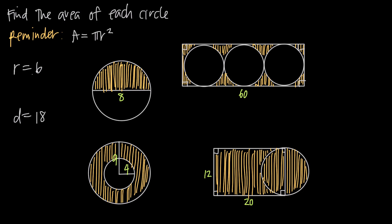So when we have a problem like this one, we're told the radius is equal to 6. All we have to do is plug 6 in for r and get our area. So area is equal to pi times 6 squared. 6 squared is 36, so we get 36 times pi. Sometimes you'll be asked to give a decimal or fractional answer instead of an answer in terms of pi. If you're asked for an answer in terms of pi, you want to go ahead and leave pi in the answer.